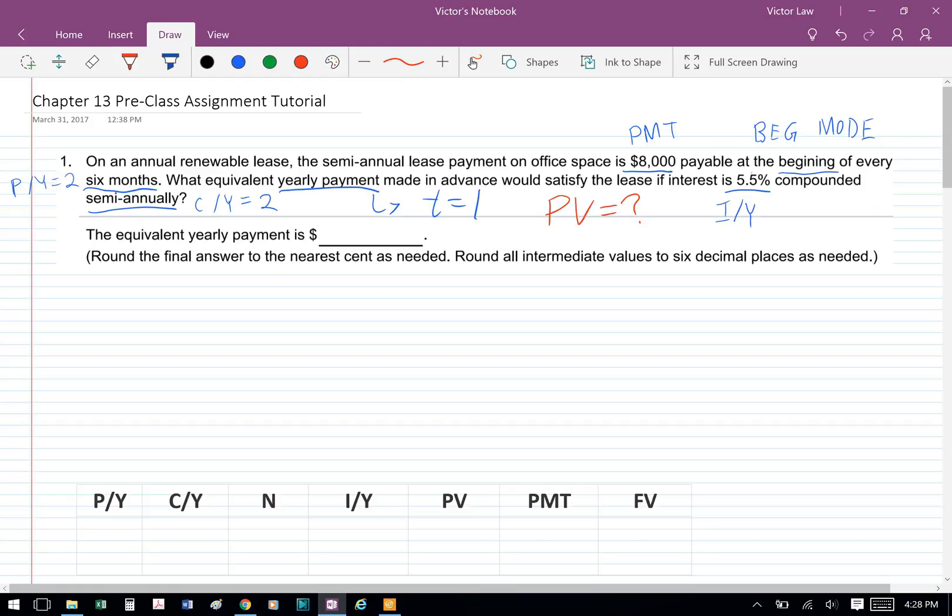For this question, the first number that we see is $8,000, that's our PMT. And then the payments are made at the beginning of the period, so we have to set it to BGN mode.